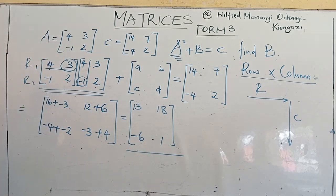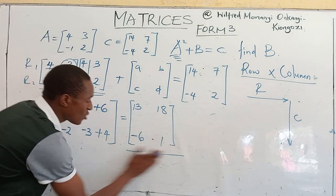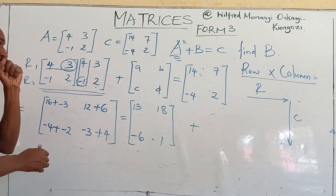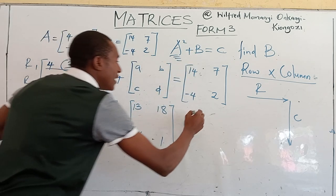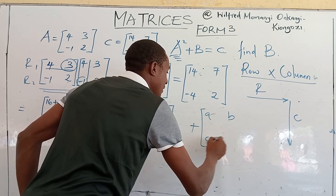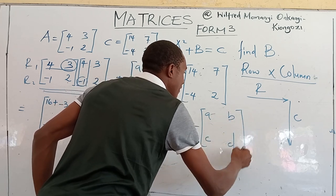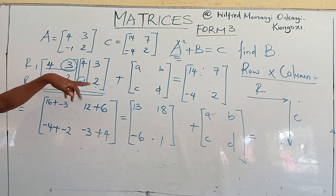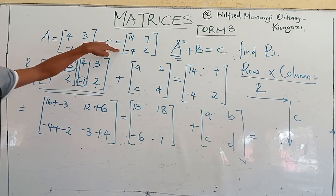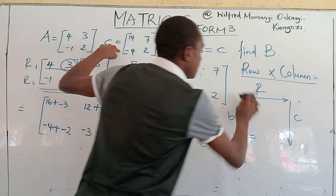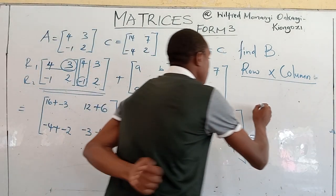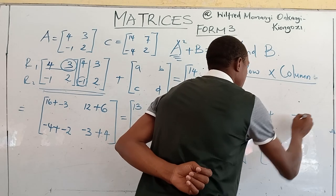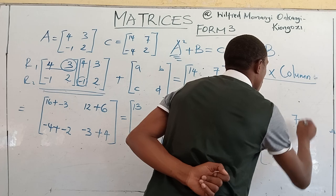So this is the product of multiplying A by itself, or A squared: [13, 18; -6, 1]. Now this plus the unknown matrix B with elements [a, b; c, d] will give us the answer C, which is [14, 7; -4, 2].